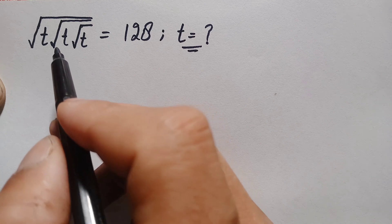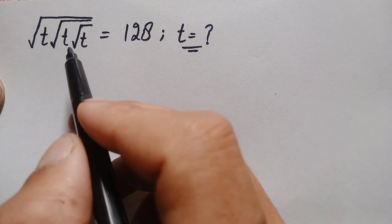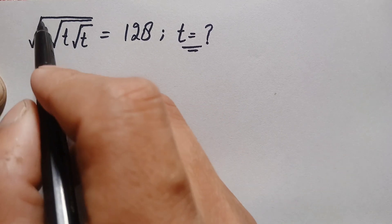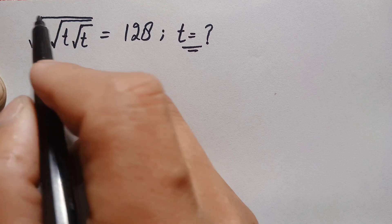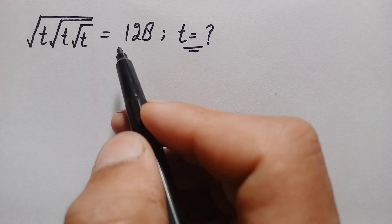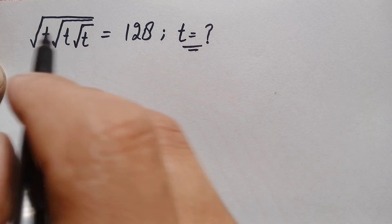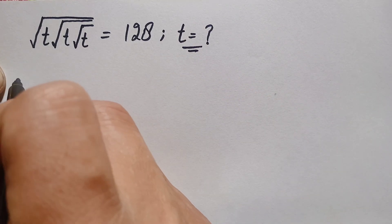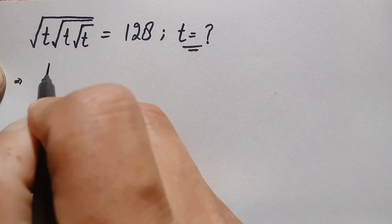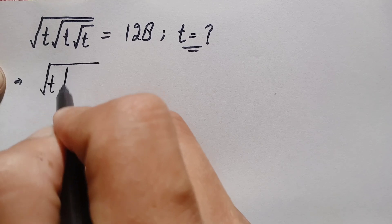First of all, we will try to eliminate these square roots from the left-hand side. There are three square roots, so first we will try to eliminate the outermost square root. To eliminate this square root, we will take the square on both sides of this equation.